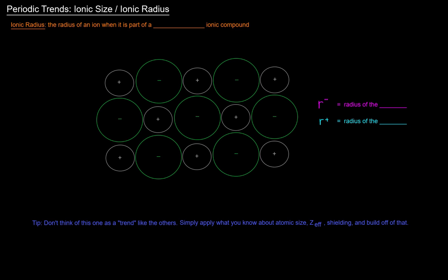So next up is the ionic size, or ionic radius. And this really isn't too much different from atomic radius, except that we're not going to look at it quite like a trend, but let's start off with the definition. The ionic radius is the radius of an ion when it's part of a crystalline ionic compound, an example of which would be something like NaCl.